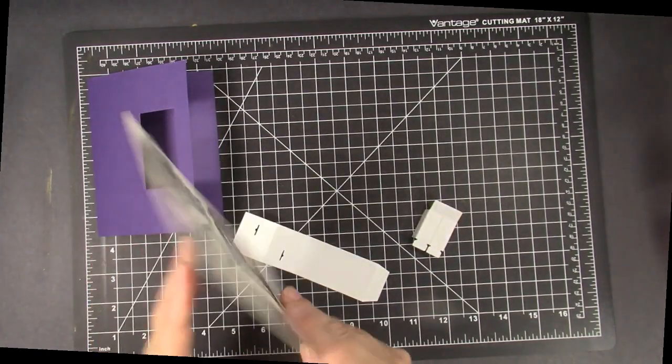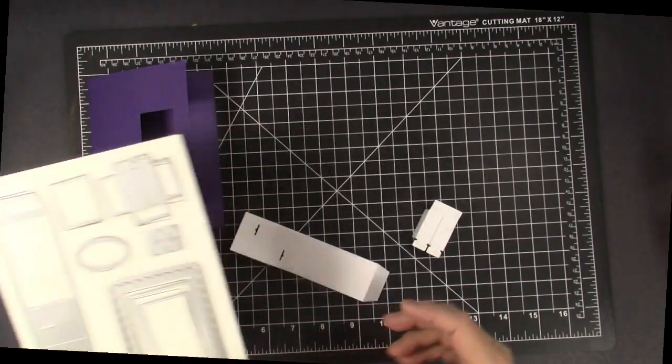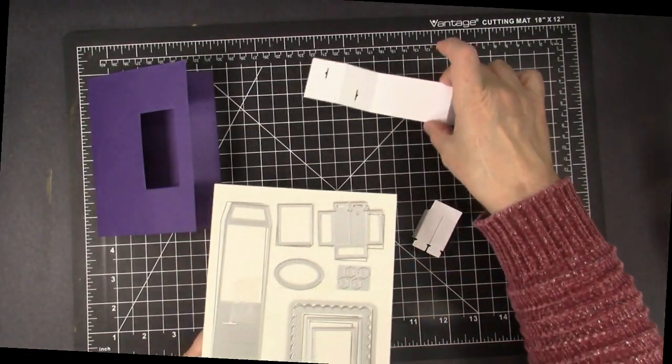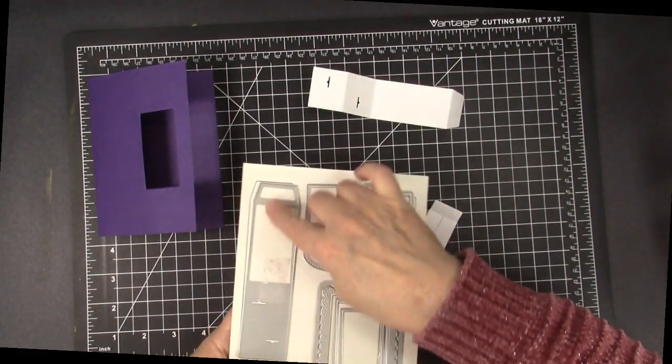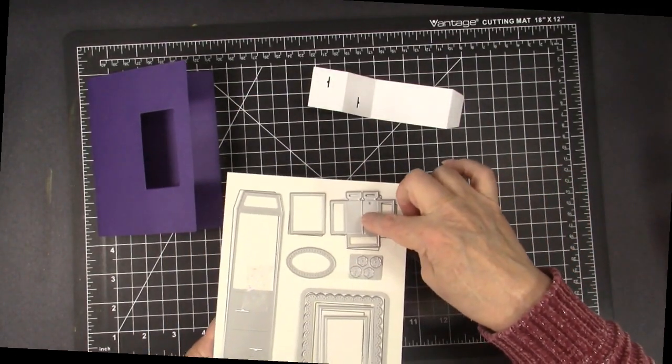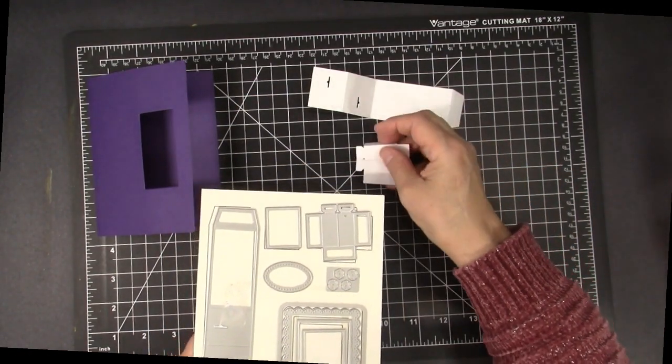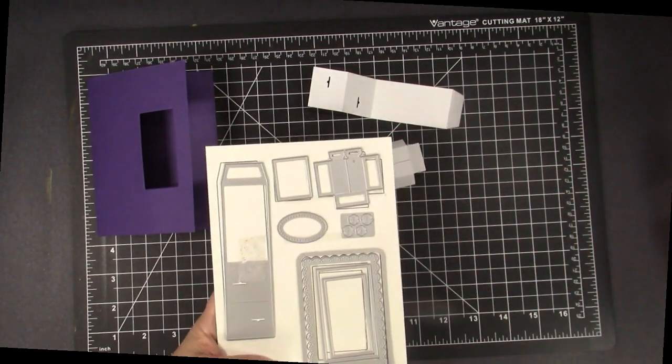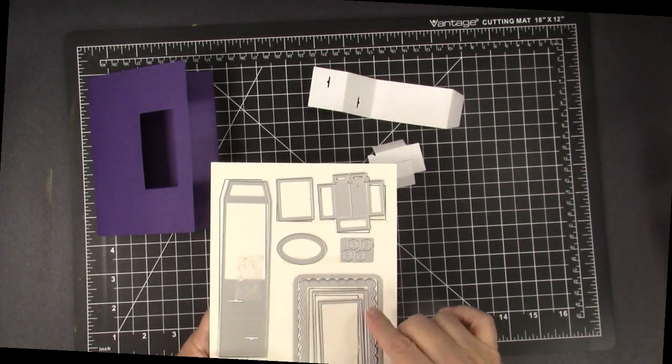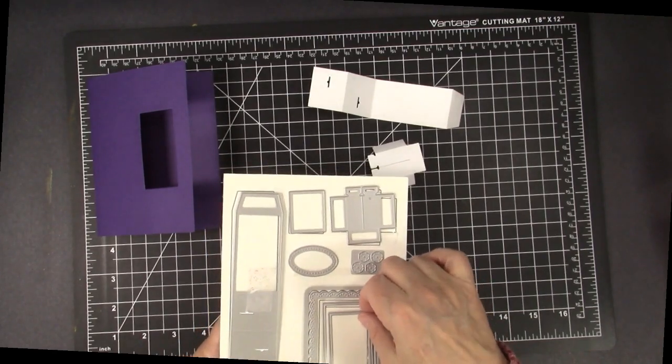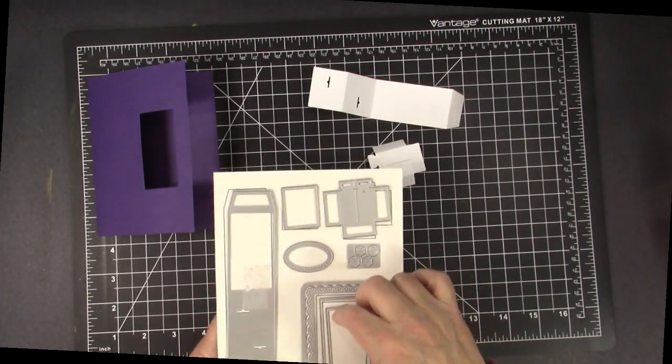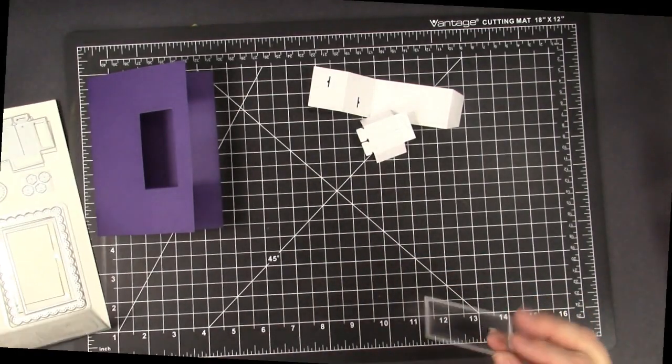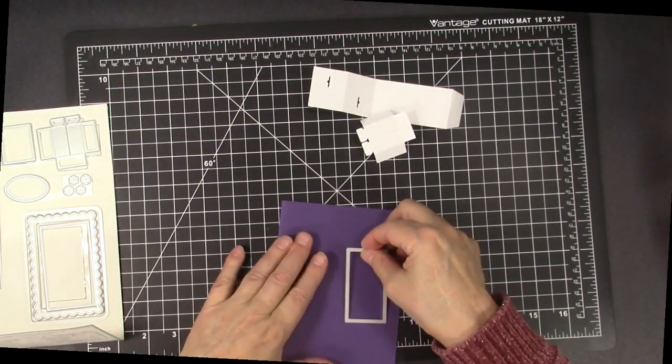In the die set, here are the pieces. You're going to cut one of this apparatus and one of this piece, and those are those two pieces, and that's going to combine to make that pop-up motion. You get several rectangle shapes, and you take the smallest one here, and you die cut the window out of the front.